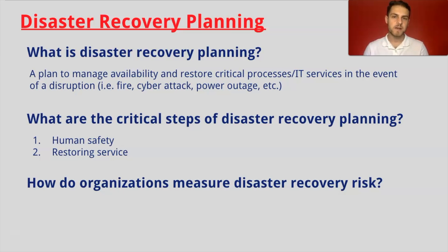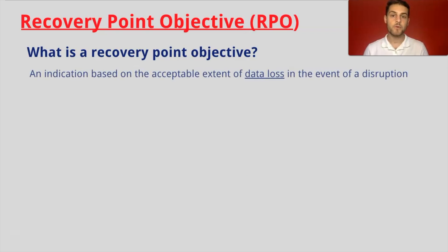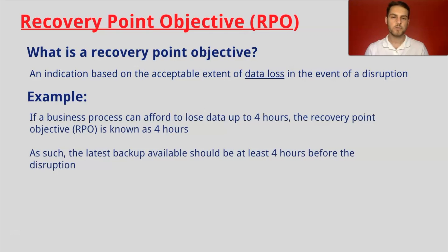How do organizations measure disaster recovery risk? There are two measurements that the CEAS exam covers: recovery point objective and recovery time objective. Recovery point objective can be classified as an indication based on the acceptable extent of data loss in the event of a disruption. For example, if a business process can afford to lose data up to four hours, the recovery point objective is known to be four hours. As such, the latest backup available should be at least four hours before the disruption.